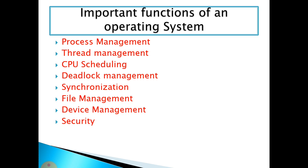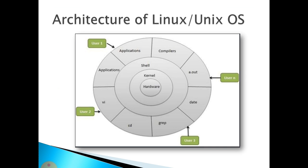This is the layer architecture of a Linux or Unix operating system. Hardware is the core part of any system but does not understand human language — it is accessed through the kernel. The kernel is the core part of the operating system; when you install an OS, the kernel is the major system file. Above the kernel is the shell layer, and above that is the application layer where different applications are installed.